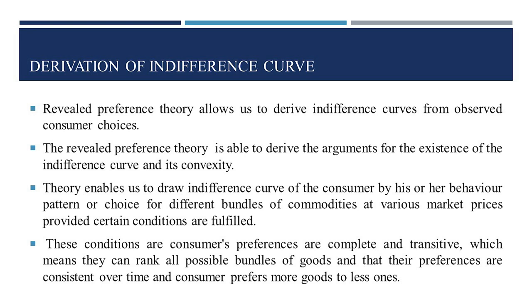The theory does this by using consumer behavior or a consumer's choice of various commodities at varying costs. Revealed Preference Theory does not ask consumers to give information about their tastes and preferences. Rather, the theory enables us to draw the indifference curve of a consumer from his or her behavior pattern or choice for different bundles of commodities at various market prices, provided certain conditions are fulfilled — that consumer preferences are complete and transitive, consistent over time, and that consumers prefer more goods to fewer.